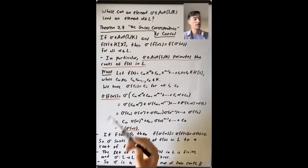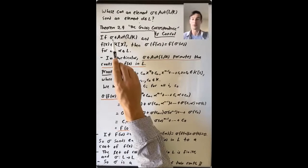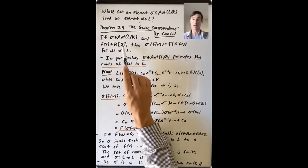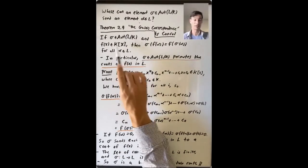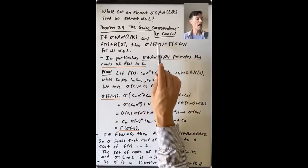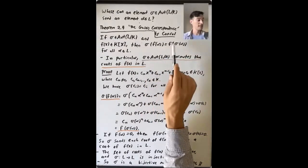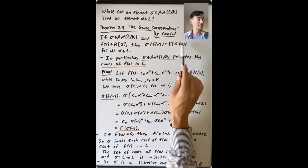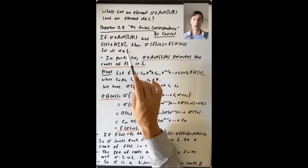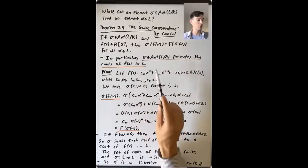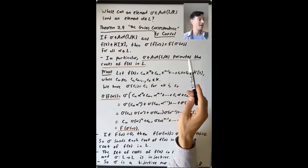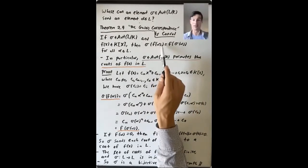So what are we going to prove? If sigma is an automorphism of L fixing K, and f(x) is a polynomial in K[x] — so coefficients in K — then σ(f(α)) = f(σ(α)) for all α in L. The case most important to us is what happens when α is a root of the polynomial f.